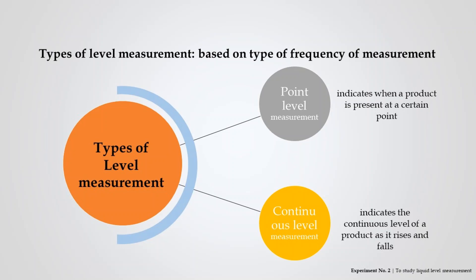The level measurement can be either continuous or point level. Point level measurement indicates when a liquid is present at a certain point, whereas continuous level measurement indicates the continuous level of the liquid as it rises and falls.